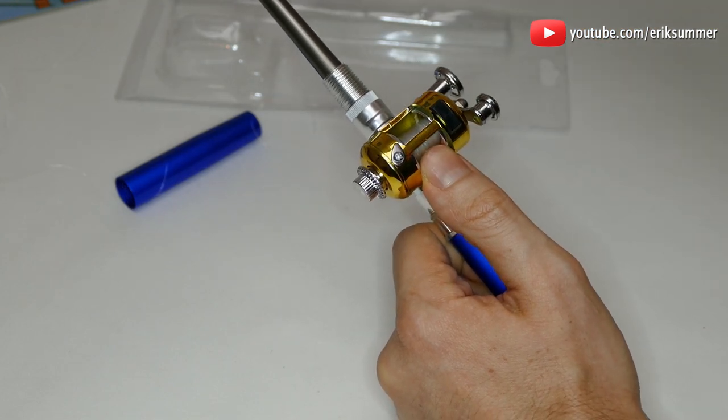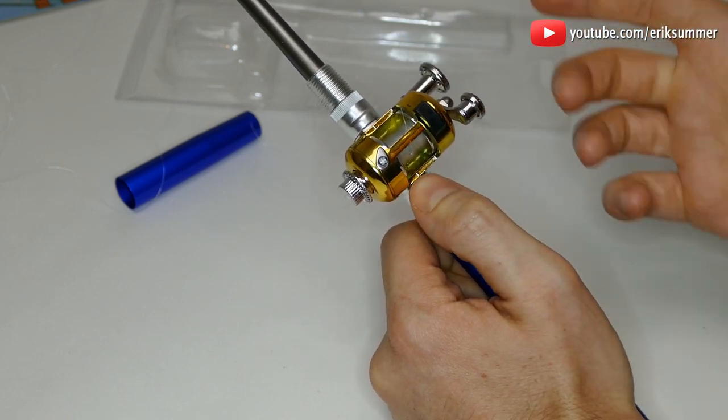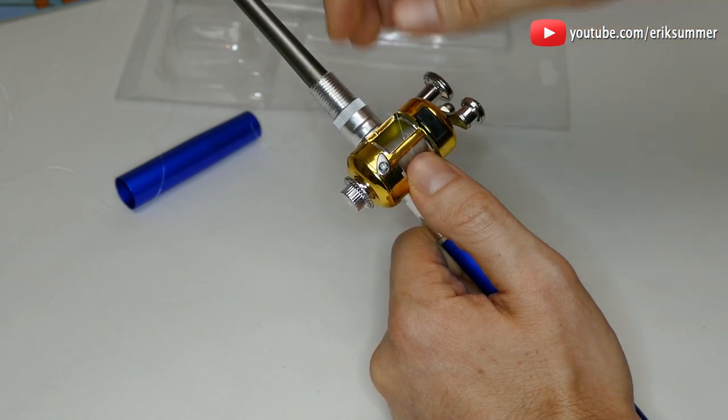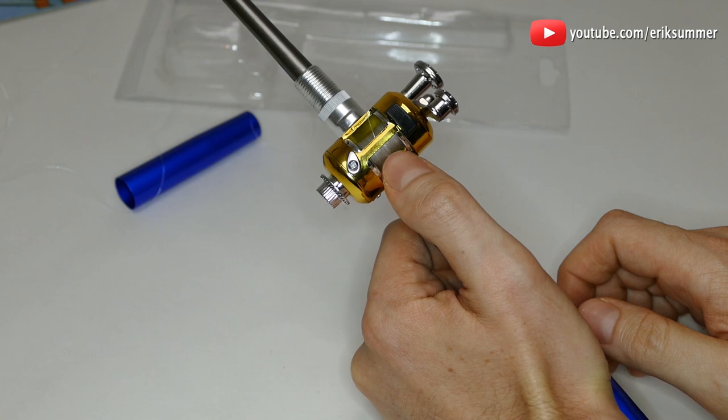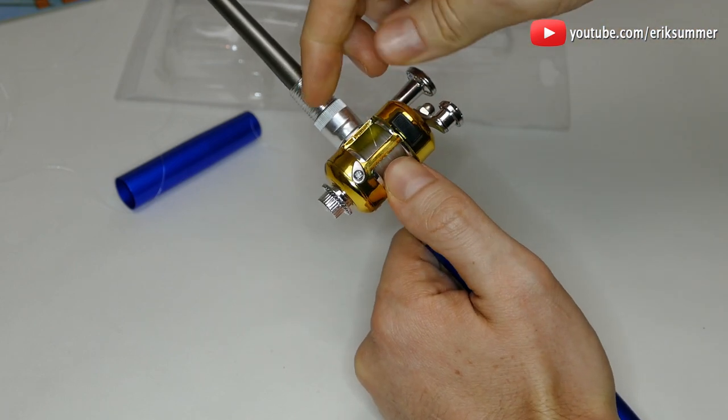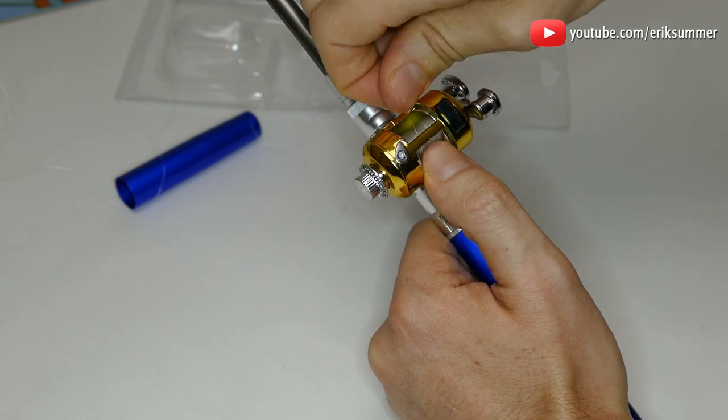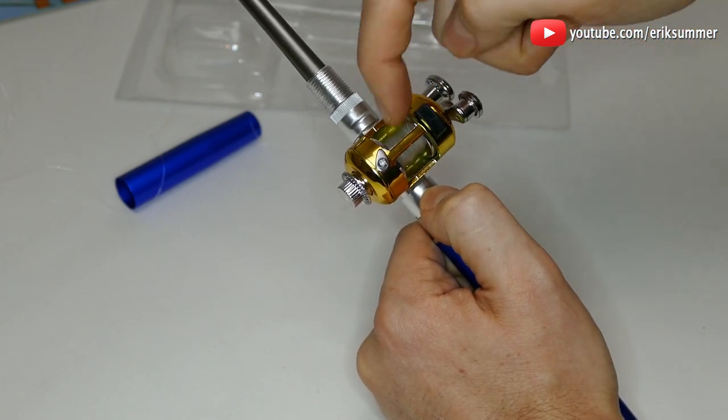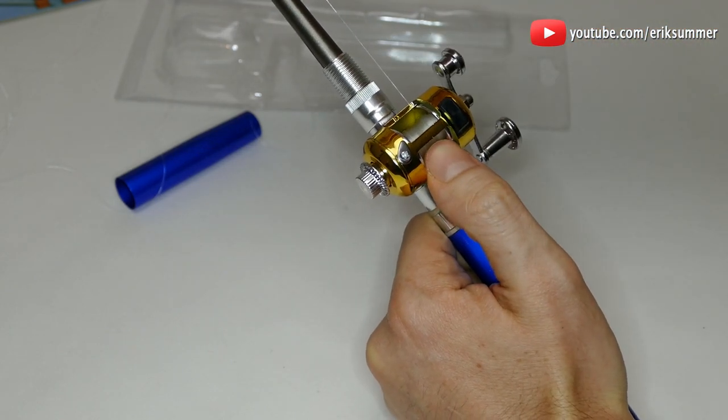As far as casting goes, this is the type of reel that will get bird's nest, so I wouldn't be casting if you don't have experience with these kind of reels. I would just be casting maybe 10 feet out and make sure to always keep your thumb on the reel right here, so once it hits the water you immediately stop it so it doesn't just keep winding out, or else you're going to get a pretty bad bird's nest. A bird's nest in this small of a reel is going to be really hard to untangle.